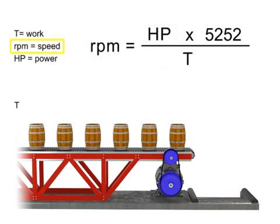If speed remains constant, then torque and horsepower are proportional. As the torque increases, horsepower also increases to maintain constant RPM.